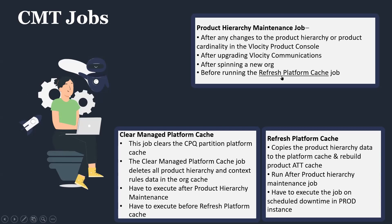Before running refresh platform cache, the previous jobs have to be executed first. The clear managed platform cache job clears the partition — that is, data created at the org cache level. It will delete all the product hierarchy and context rules data in the org cache. It should be executed after the product hierarchy maintenance job and before refresh platform cache. The refresh platform cache job copies the product hierarchy data to the platform cache and rebuilds the product attribute cache. It has to be run after the product hierarchy maintenance job.